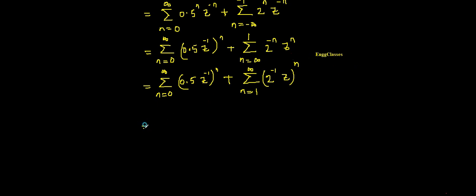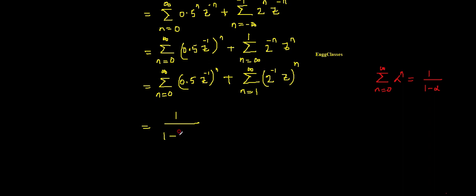Making use of the standard geometric series: summation from n equal to zero to infinity of alpha to the power n is nothing but 1 divided by (1 minus alpha). So in place of alpha I have 0.5 times z to the power minus 1. Therefore I get 1 divided by (1 minus 0.5 times z to the power minus 1).